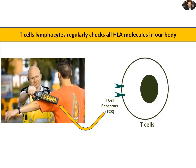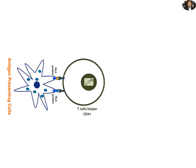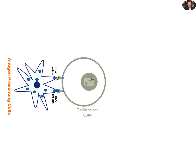On the other hand, T helper cells in our body work as security detectors, who search all antigen presenting cells for any suspicious foreign molecules. Once T helper CD4 cells meet HLA molecules connected to citrullinated collagen, they become activated.